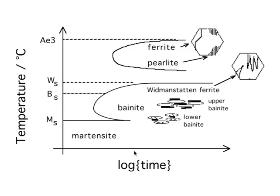This is our time-temperature transformation diagram. I explained to you that you can basically treat it as two C curves — one for the reconstructive transformations and the other for the displacive transformations. We've considered already martensite and bainite, and today we are going to finish off the displacive transformations with Widmanstätten ferrite.